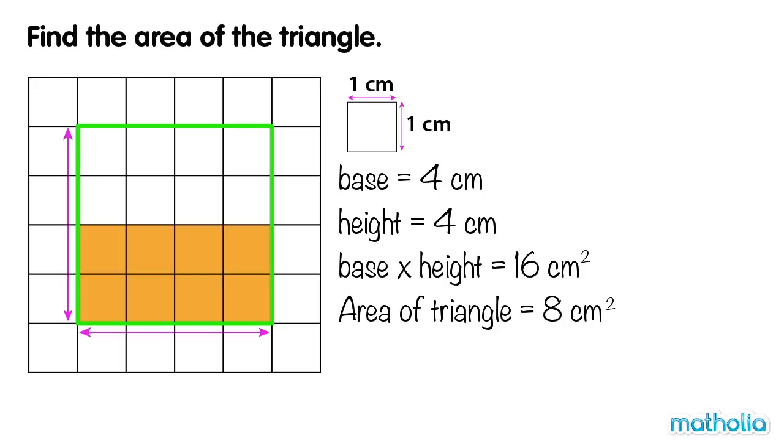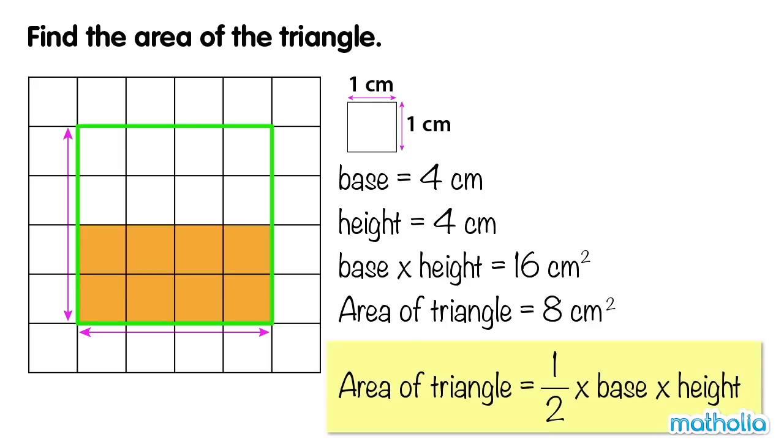So the area of the triangle is half of the area of the rectangle formed by the base and the height. The area of a triangle equals half times base times height.